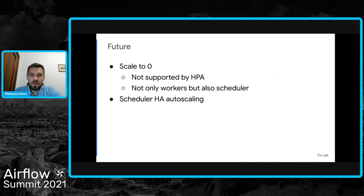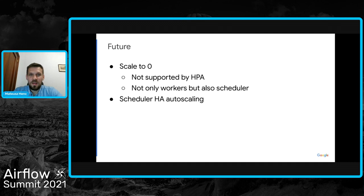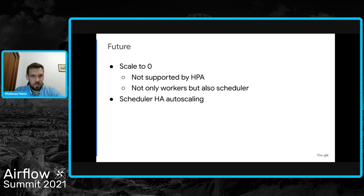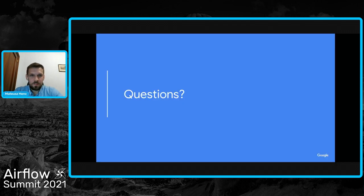As for future plans: one idea is scaling down to zero workers. HPA does not support this out of the box, and currently we can't do it because we run monitoring tasks in workers to report environment health. We plan to scale down not only workers but also the scheduler and other components to lower costs as much as possible — useful for users who run a Composer environment only occasionally. Another option we are considering is adding auto scaling for the scheduler, though the challenge is defining the proper metric for scaling the scheduler up and down. That's all for today — thank you very much.